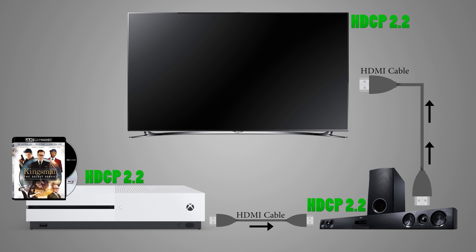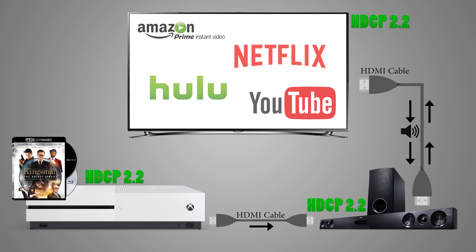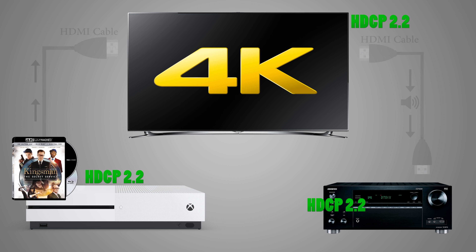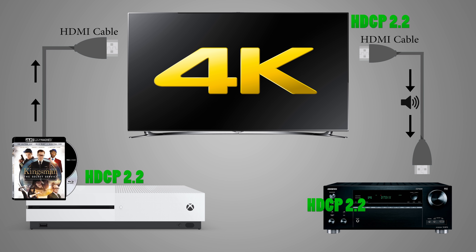Another alternative is to use what's called ARC, or Audio Return Channel. ARC allows you to use an HDMI cable to send audio and video to your TV, and it also allows your TV to send audio back through the cable to your sound bar or receiver. This means you wouldn't need a separate optical cable to get audio from your TV's built-in apps, and it'll also pass audio from devices connected to your TV back to your sound bar.